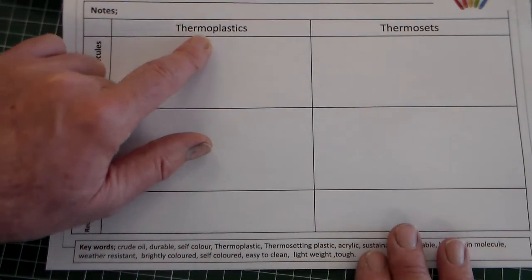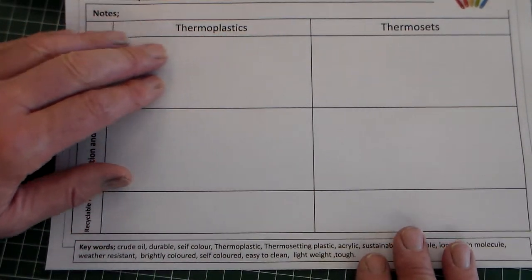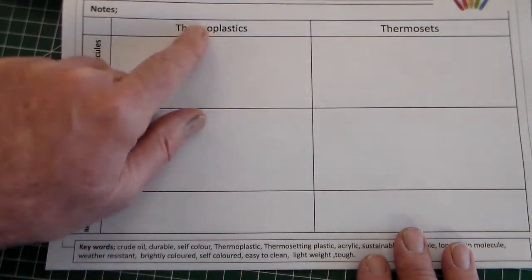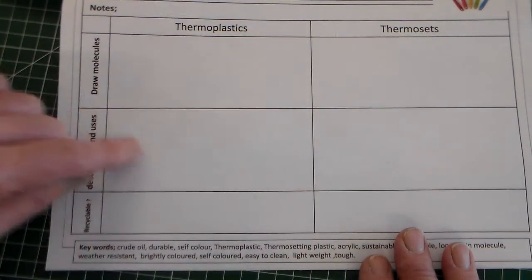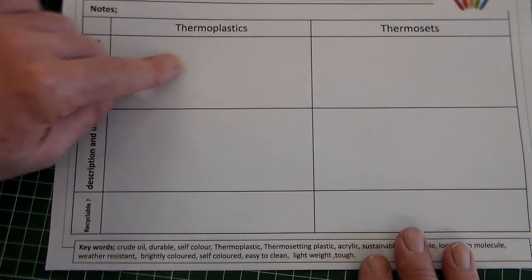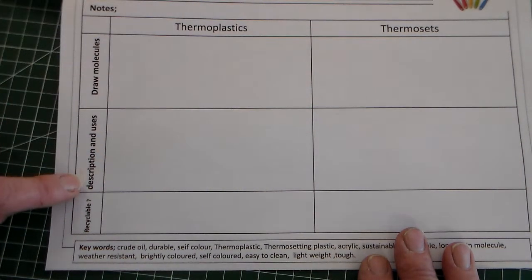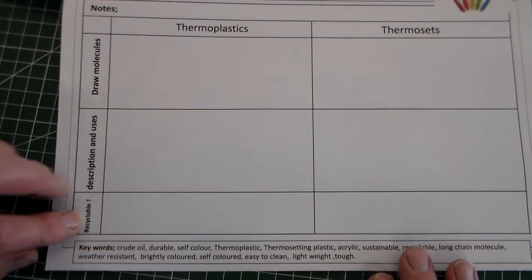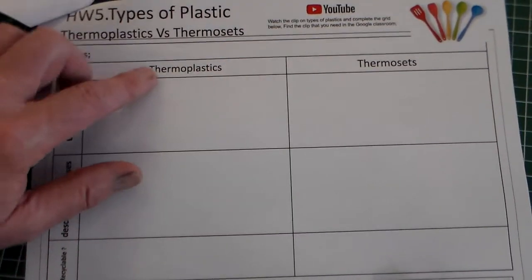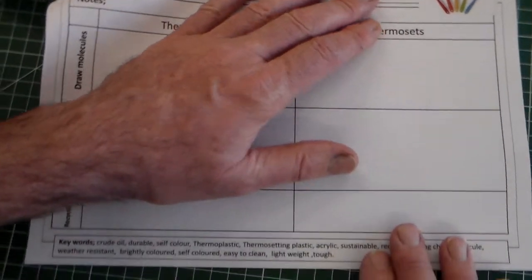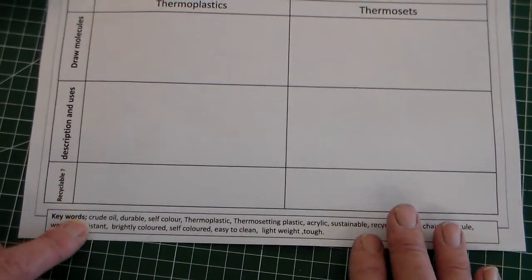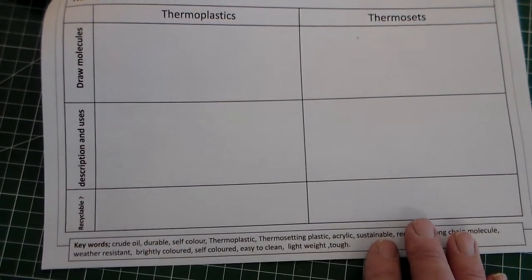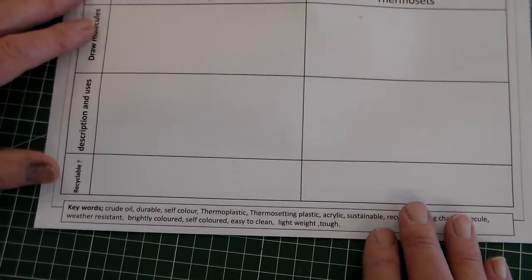Here we've got two headings. We've got a grid here which is thermoplastics and thermosetting plastics, the two types of plastics. Here we need to draw the molecules. Here we need to write a description and uses. And here we need to make a comment on the recyclability of either the thermoplastics or thermosets.